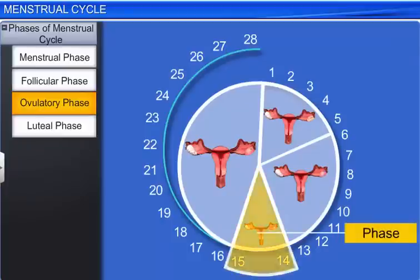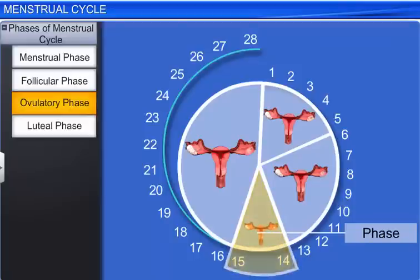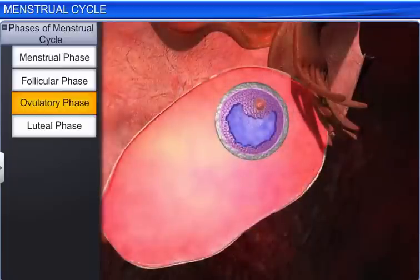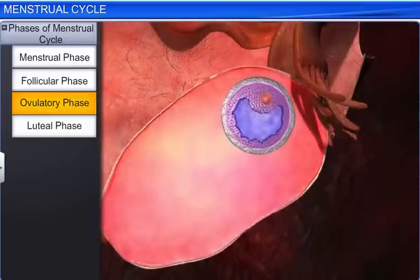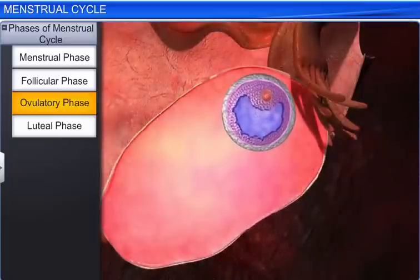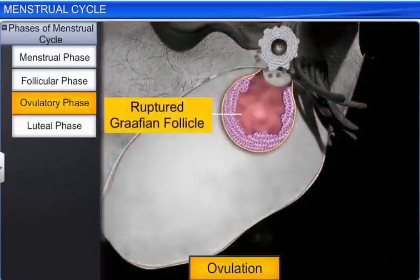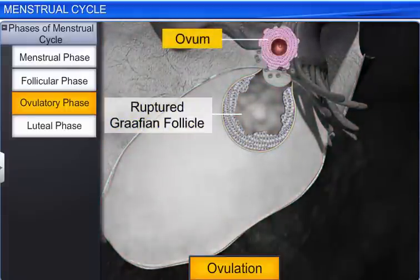The follicular phase is followed by the ovulatory phase, which occurs during the middle of each menstrual cycle. During this phase, the Graafian follicle ruptures to release an ovum, or egg cell, into the pelvic cavity, in a process called ovulation.